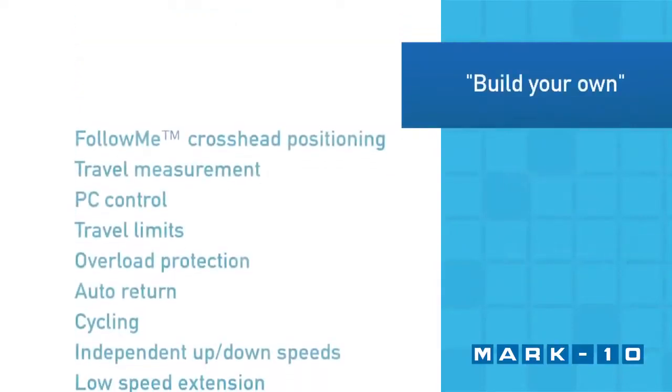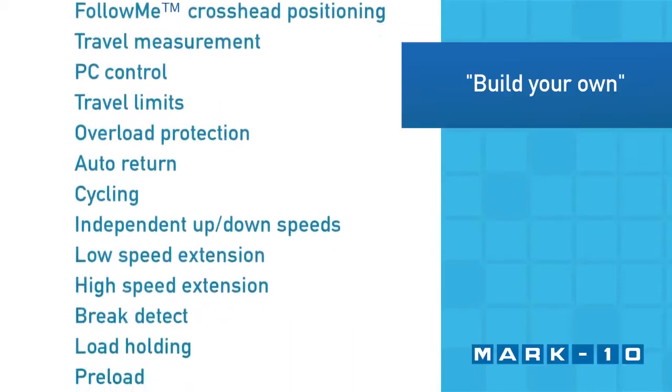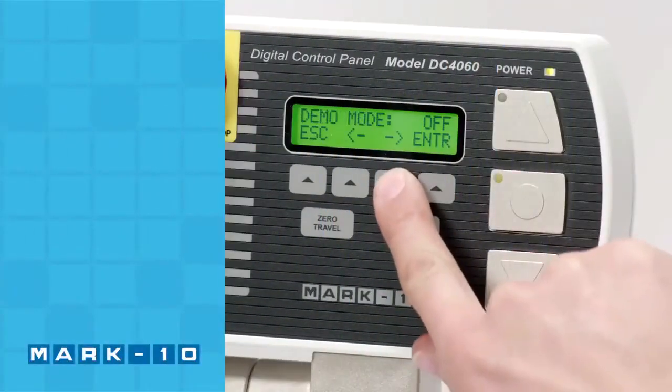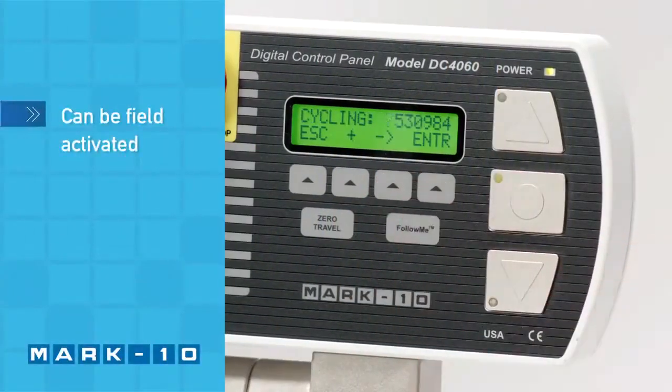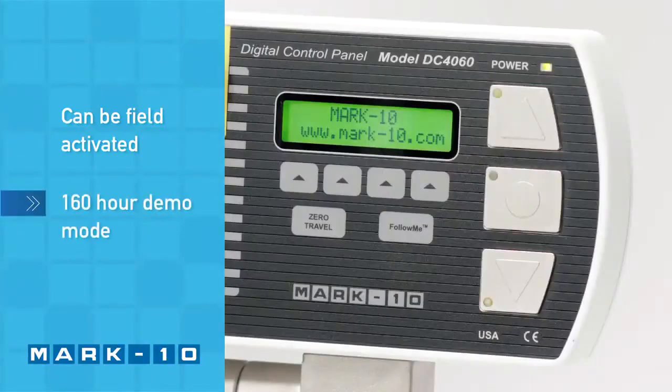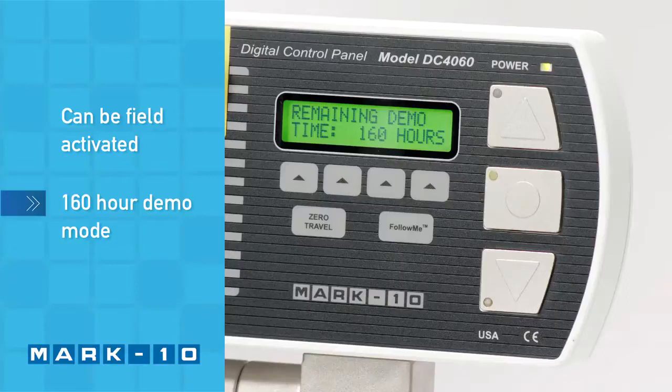The ESM-303 can be custom configured to your needs and budget through its unique function configuration platform. Functions not originally ordered can be enabled in the field by inputting an activation code. All functions are temporarily enabled for a 160-hour demo period.